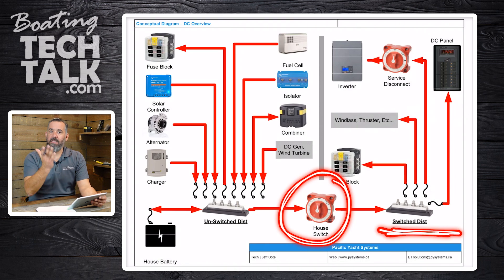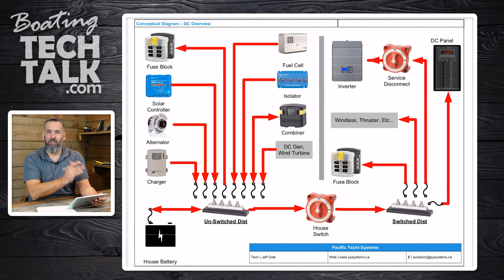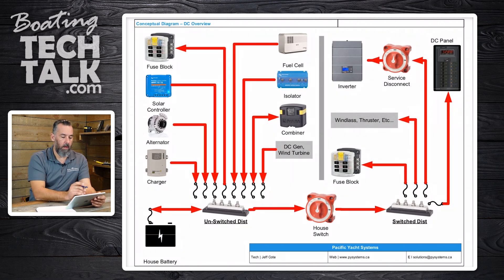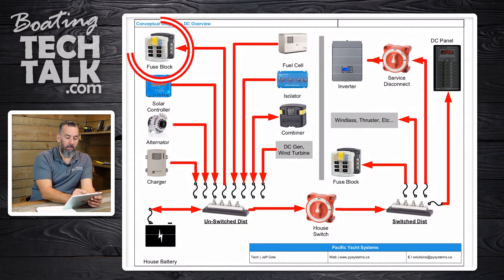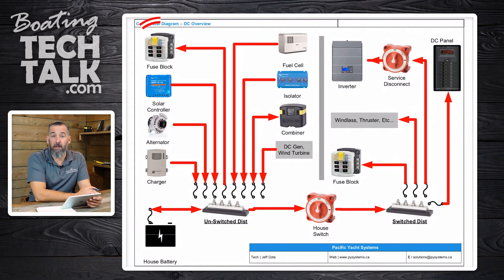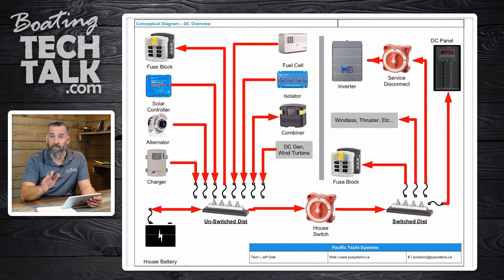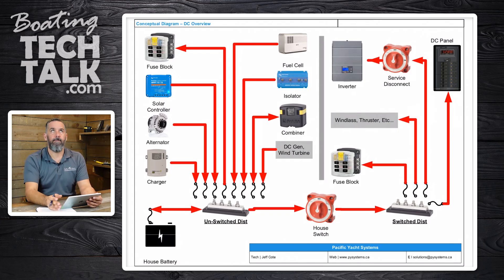So let's think about it — why do we have to have a switched and an unswitched? Well, certain circuits should always be connected. What are those? Here we've got a little fuse block, and on that fuse block you're going to have a bunch of circuits. What are those circuits that should always be on? Regardless of whether you turn the battery switch on or off, they're always on.